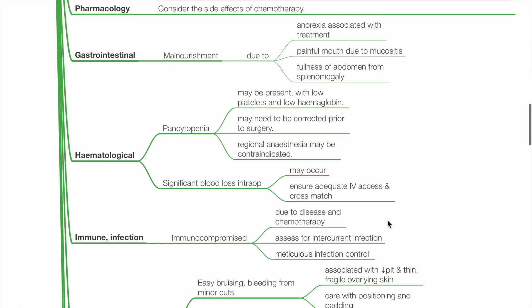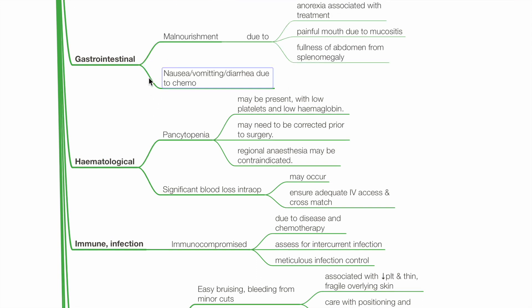Gastrointestinal: There may be malnourishment due to anorexia associated with treatment, painful mouth due to mucositis, or fullness of the abdomen from splenomegaly. The patient may have vomiting or diarrhea due to chemotherapy.